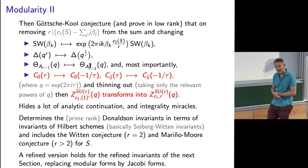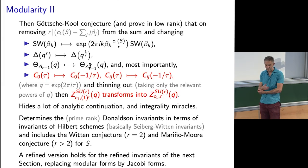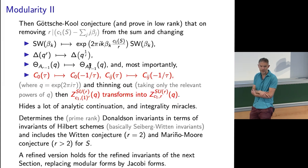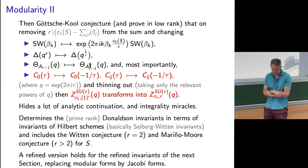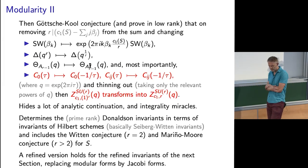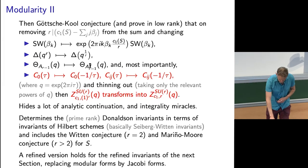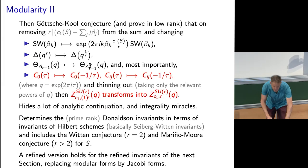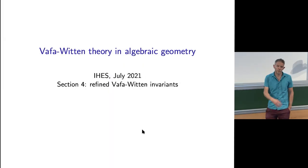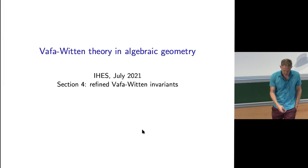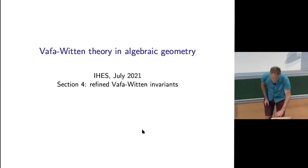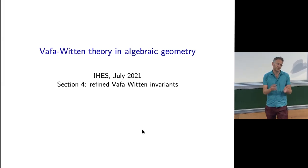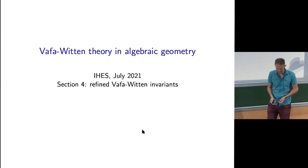There's also a refined version. In the last 25 minutes I'm going to briefly explain what refined Vafa-Witten invariants are, and then claim that everything we've been doing in the last four lectures can be done with the word 'refined' in front of it, with no further details. All the modular forms seem to become Jacobi forms. I've only got about 12 more slides; I'll go through rather quickly.